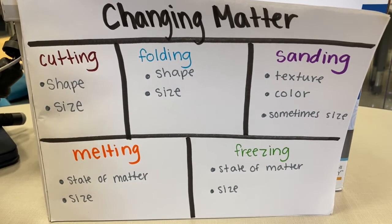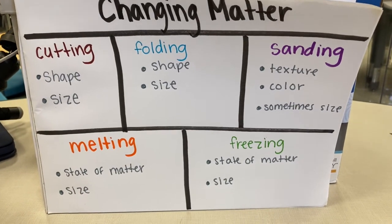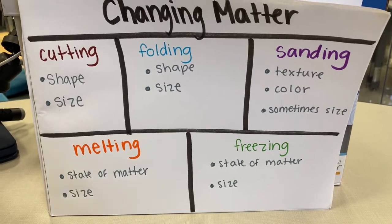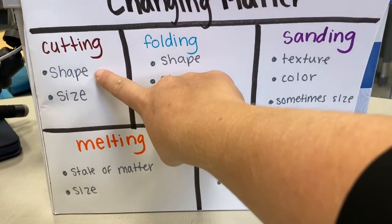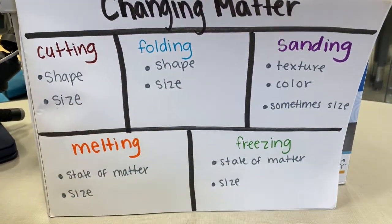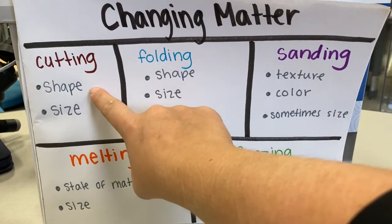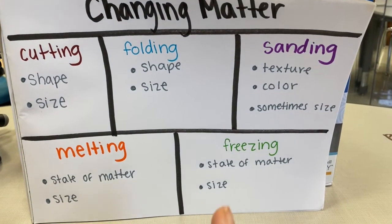So now that we've looked at each of the examples of how we can change matter, we have this chart to help remind us. Cutting matter changes its shape and size by making it smaller and by changing it maybe from a rectangle to a square or a triangle.